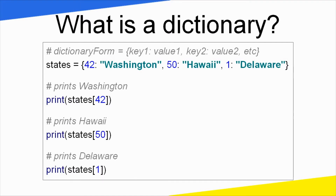What is the dictionary? A dictionary is a collection of unordered key-value pairs. The syntax is: the dictionary name equals curly braces, and inside we add key, colon, value. The key is unique, and each key maps to a value.